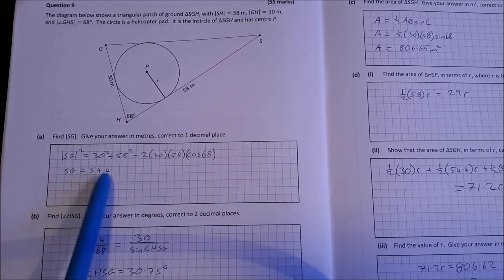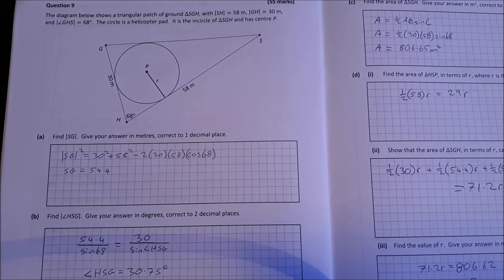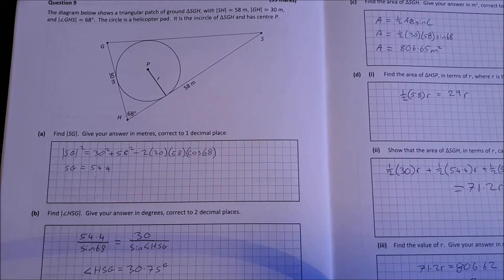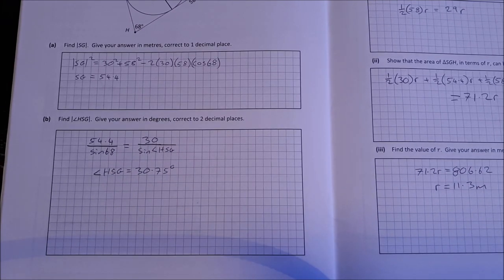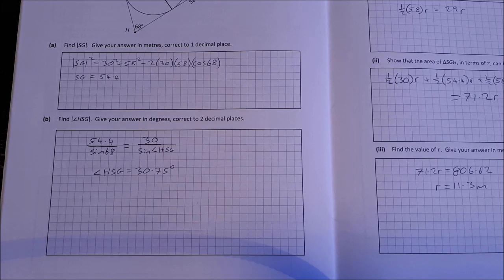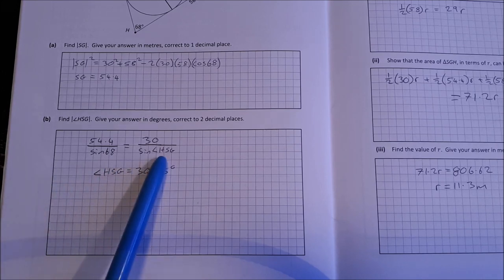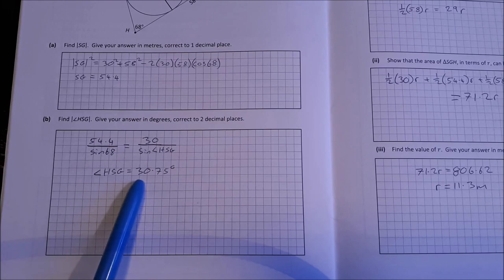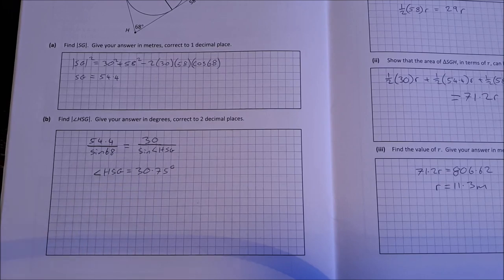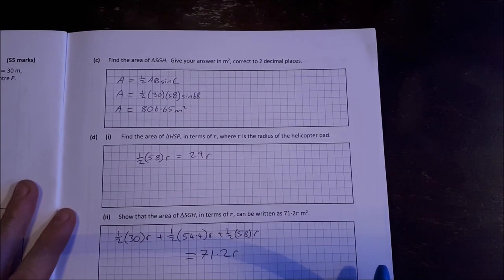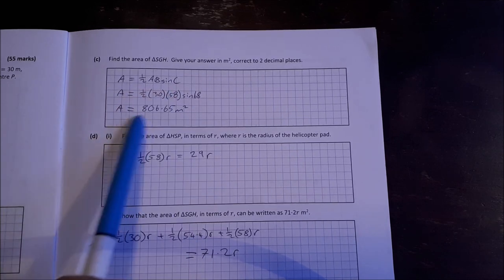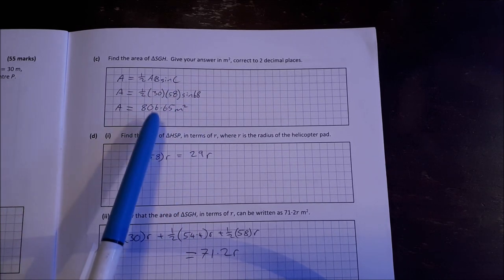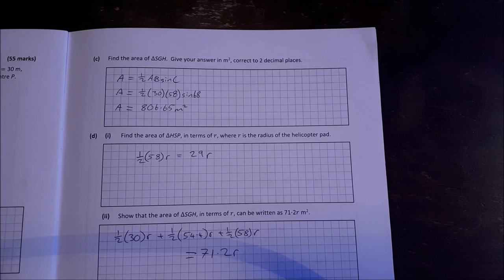Find the angle HSG, give your answer in degrees, correct to two decimal places. Use a sine rule here. This is the angle we're looking for. It works out to be 30.75 degrees. Find the area of the triangle SGH, give your answer in square meters, correct to two decimal places. Area formula, half AB sine C. Fill in your values, 806.65 square meters. Find the area of HSP in terms of OR, where OR is the radius of the helicopter pad. So the triangle HSP is going to be half 58 times the radius, so half the base by the height, 29 OR.